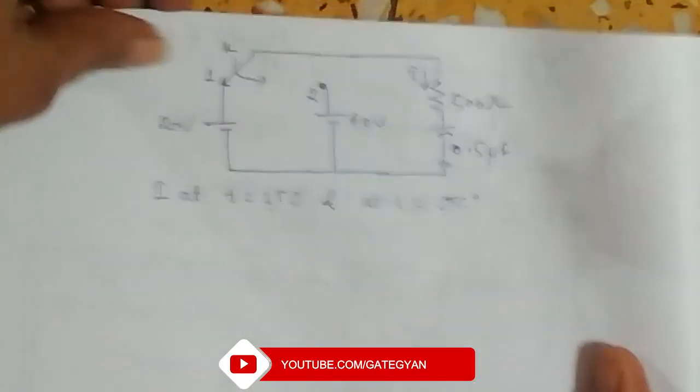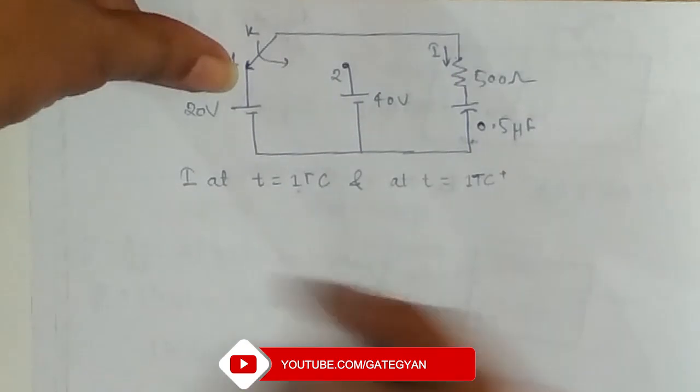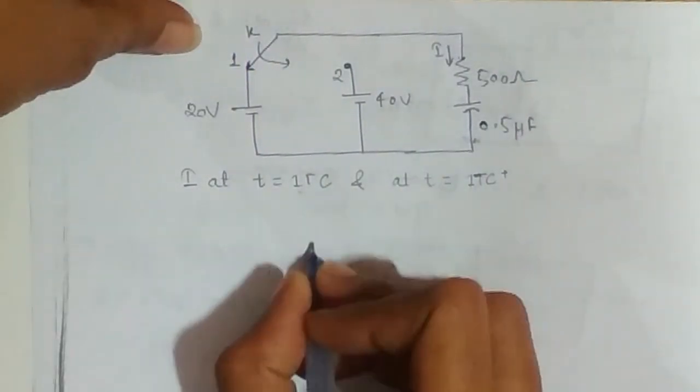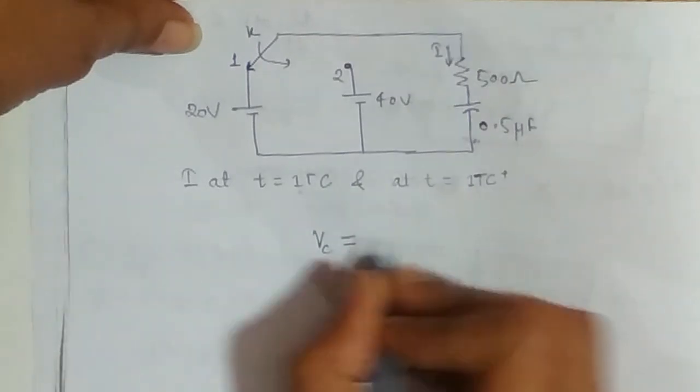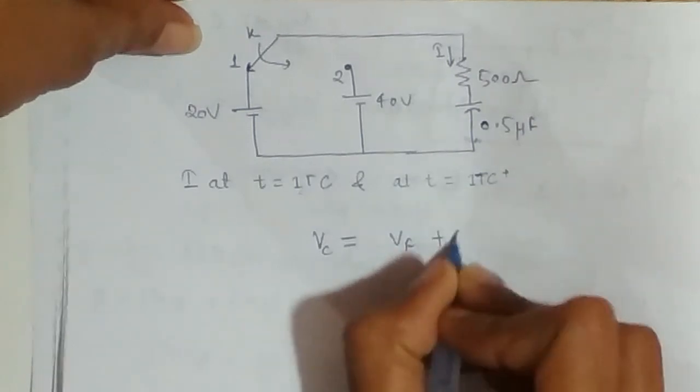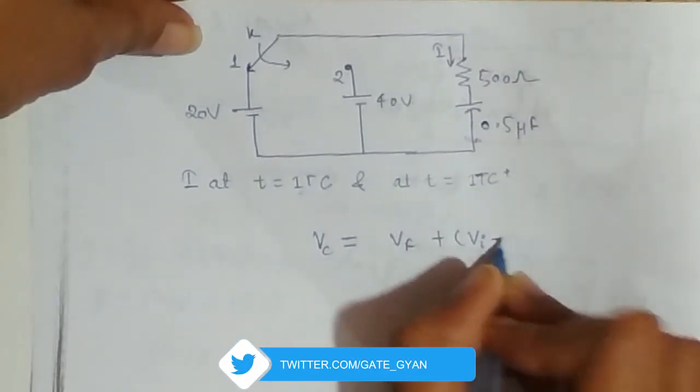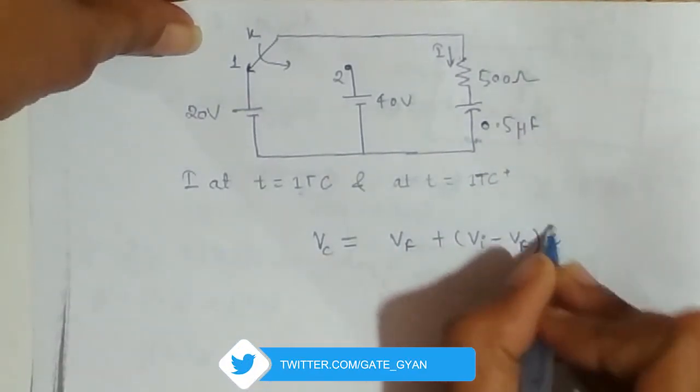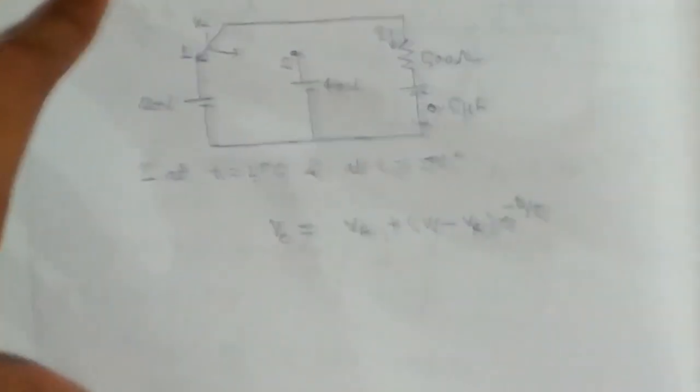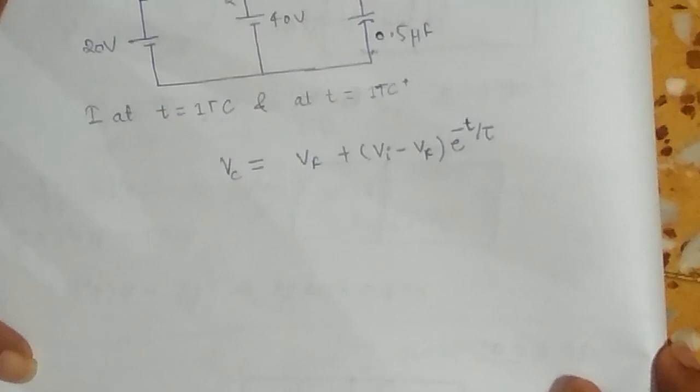At t equals tau, we will use the final initial value method here for the capacitor. By that method, my vc is given by v final plus initial minus final to the power minus t by tau.